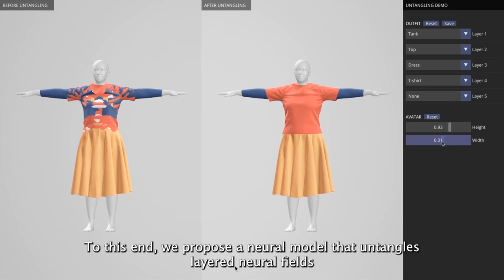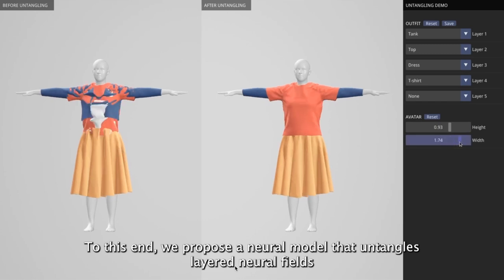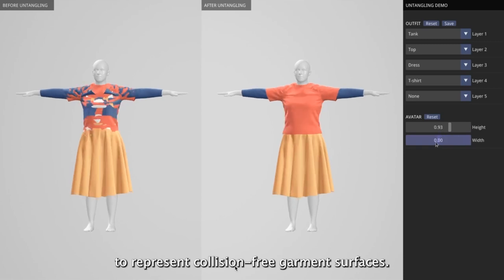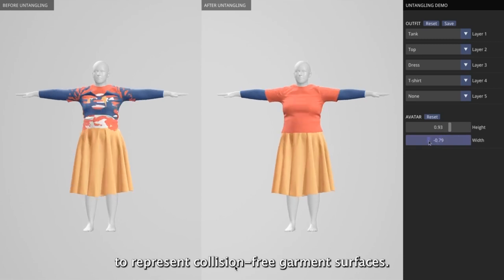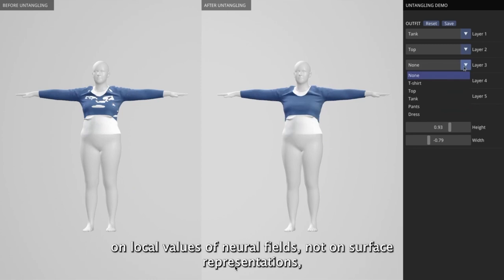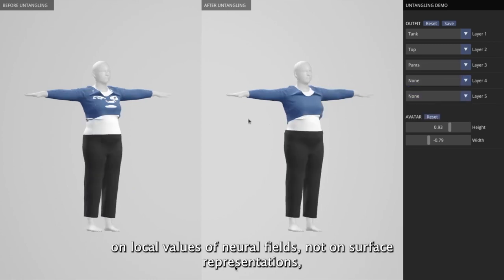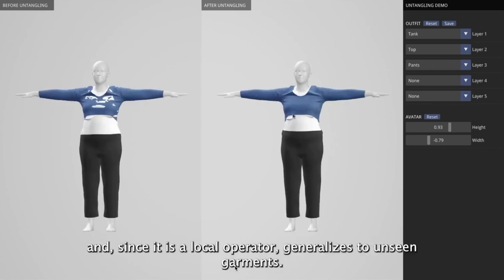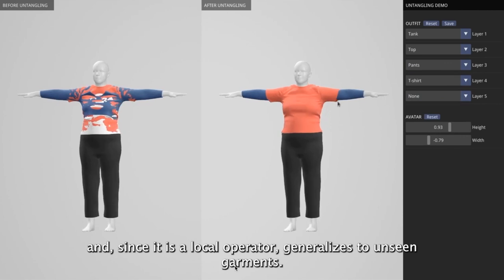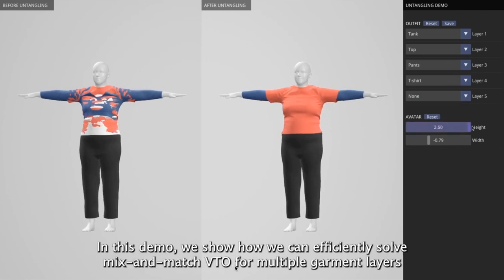To this end, we propose a neural model that untangles layered neural fields to represent collision-free garment surfaces. Our neural untangling projection operates directly on local values of neural fields, not on surface representations.